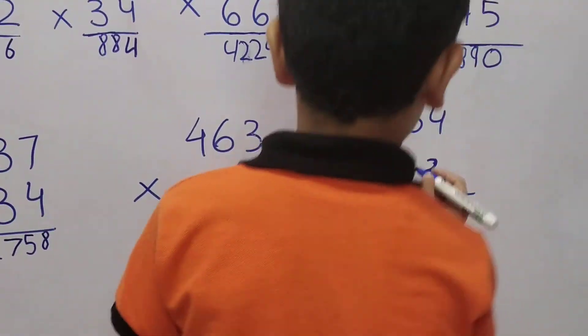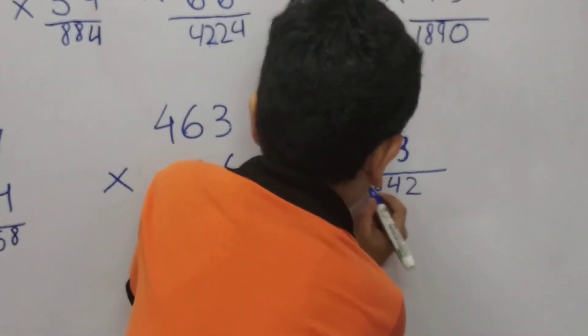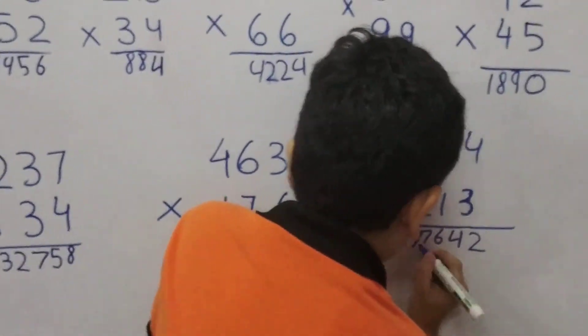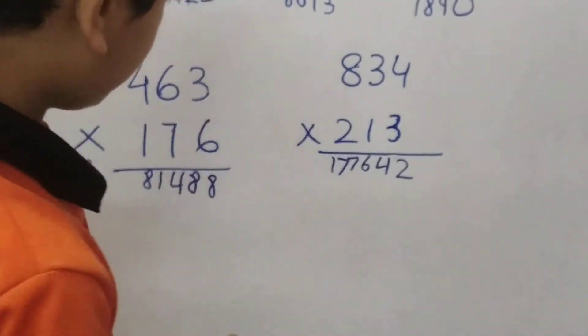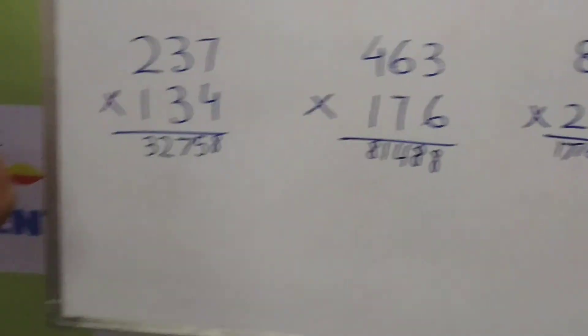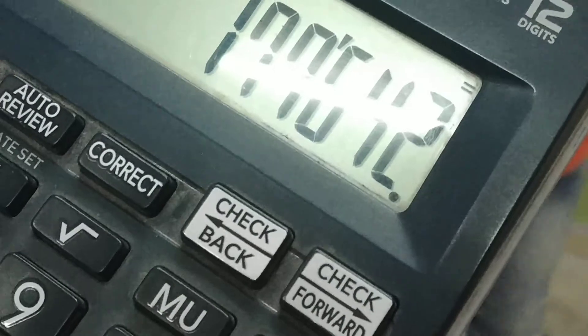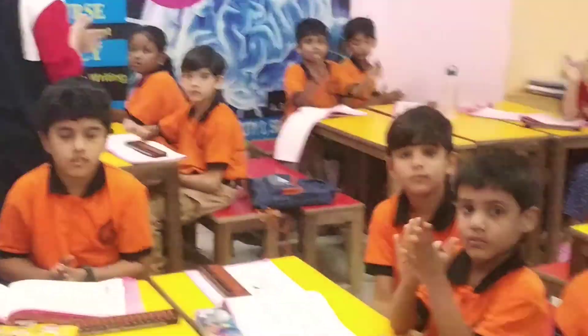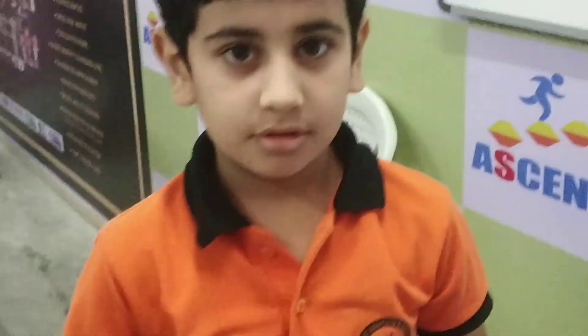We also need to take into consideration the time limit. And the time limit, though for his age, we can work on the time limit. So the answer is 834 into 213 is 177642. Clap for Yejas, he did it. Wonderful.